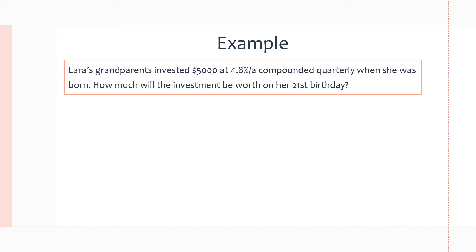Now let's go over an example. Lara's grandparents invested $5,000 at 4.8% annually, compounded quarterly — meaning interest is earned every 3 months, 4 times a year — when she was born. How much will the investment be worth on her 25th birthday? We want to use our future value equation to find how much it's worth after 25 years. Our formula is A equals P times (1 plus I) to the power of N.